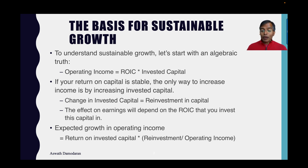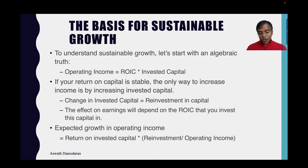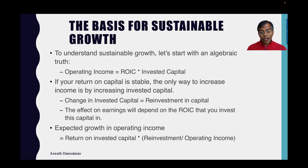The effect on operating income will depend on what kind of return on invested capital you earn on that reinvestment. Remaining in a world where return on capital is stable, the growth in operating income can be written as return on invested capital multiplied by the reinvestment rate, which is reinvestment divided by after-tax operating income. For example, if your return on invested capital is 20% and you reinvest 400 million out of a billion dollars in after-tax operating income, your reinvestment rate is 40%.